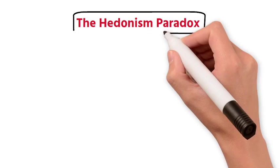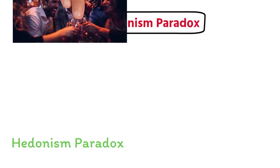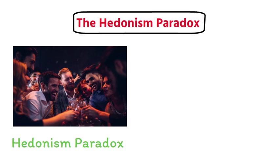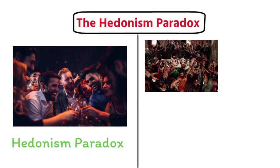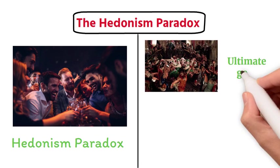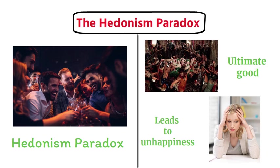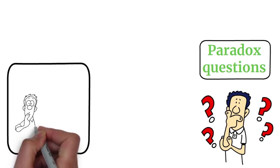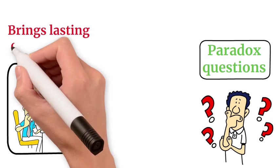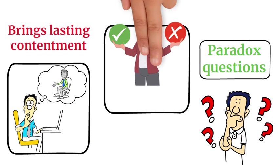The Hedonism Paradox delves into the pursuit of pleasure and happiness, asserting that while pleasure is sought after as the ultimate good, its relentless pursuit often leads to unhappiness. This paradox questions whether the relentless pursuit of pleasure truly brings lasting contentment, or if it leads to a cycle of dissatisfaction.